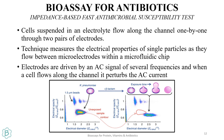Each dot in the graph represents a cell. The number of cells found outside the contour region can determine the concentration needed to kill those cells. In this way, you can find the best antibiotic concentration to achieve a specific level of sterilization.